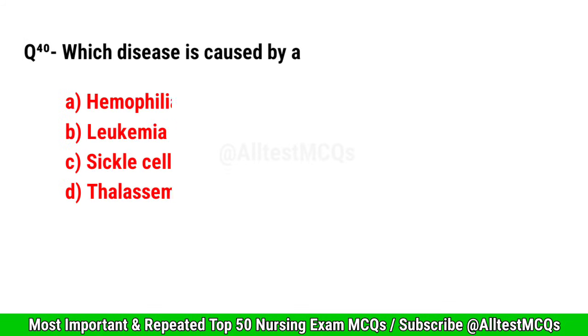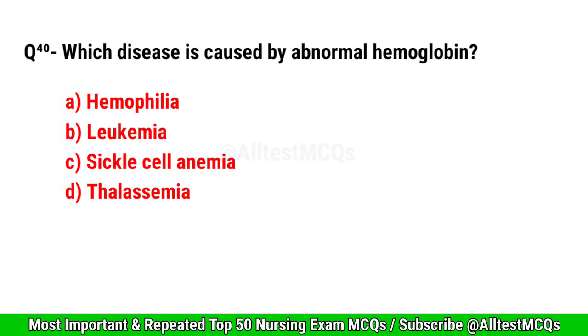Question No. 40. Which disease is caused by abnormal hemoglobin? Correct option is C. Sickle cell anemia.